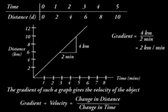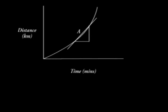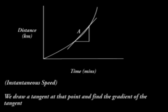When the object is accelerating, a non-linear curve is obtained, consider the figure below. To obtain the speed at a certain time, that is instantaneous speed, we draw a tangent at that point and find the gradient of the tangent.